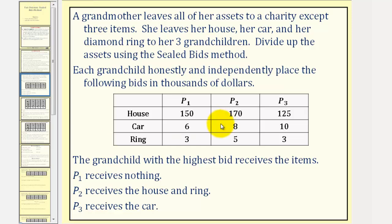Each grandchild honestly and independently places the following bids in thousands of dollars for the three items. The highest bidder receives the item. Looking at the house, here's the highest bid, so player two receives the house. For the car, here's the highest bid, player three receives the car. For the ring, here's the highest bid. Notice player two also receives the ring.